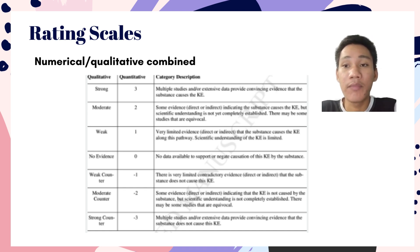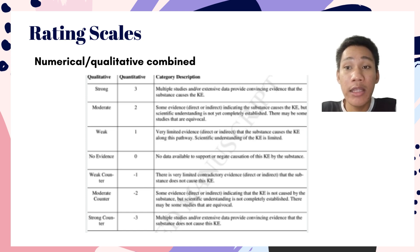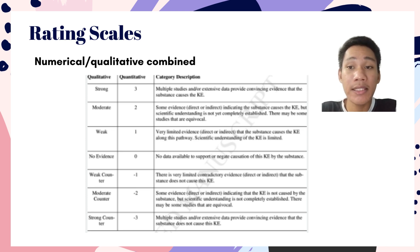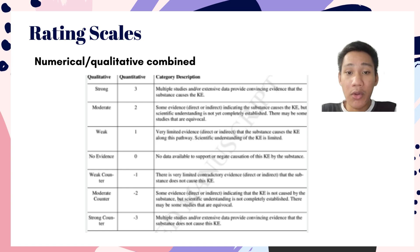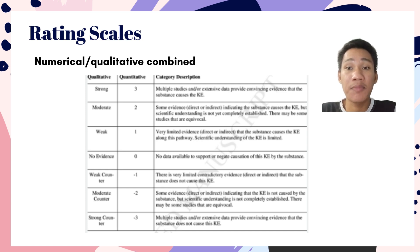The last type is numerical and qualitative combined — both are combined together. As you can see in the example, there is a qualitative scale, a quantitative scale, and also a category description. This means that aside from providing a numerical scale, you are also providing a description explaining the reason why you assign that specific rating.